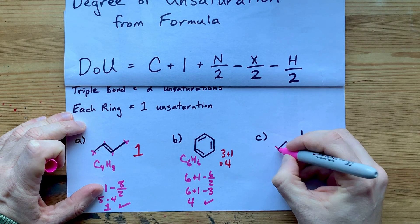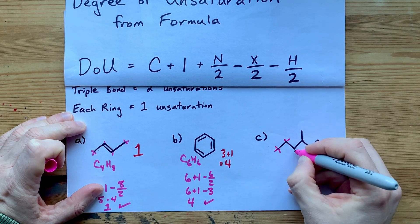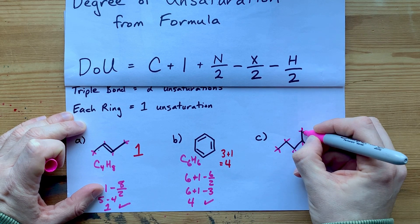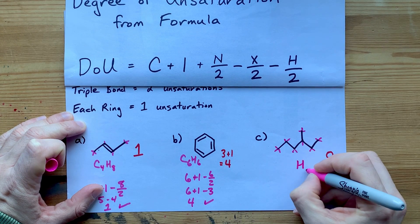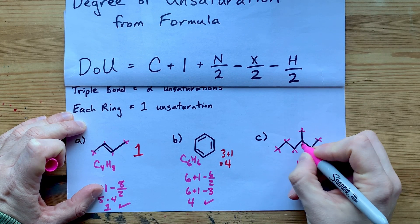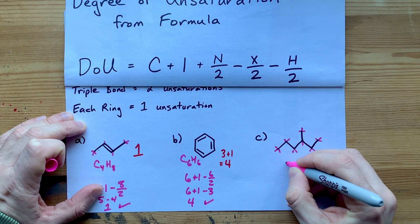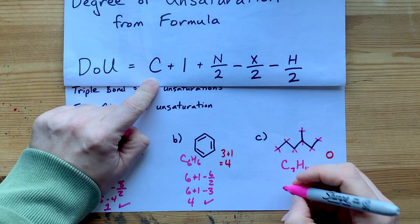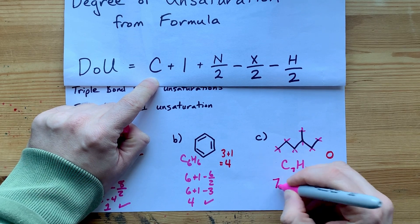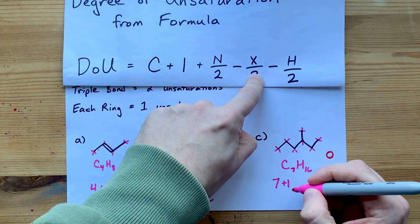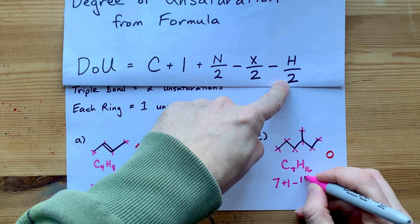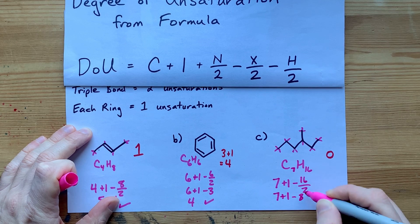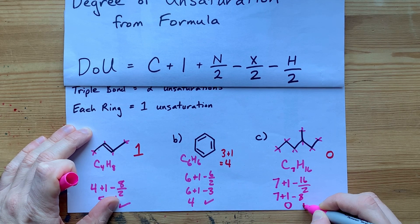This one might be a little tougher. Counting the hydrogens and carbons, this is C7H16. According to the formula, our degree of unsaturation is seven plus one, no nitrogens, no halogens, and we minus 16 over two. That's seven plus one minus eight, which gives me zero in the end. Hey, we were right again.